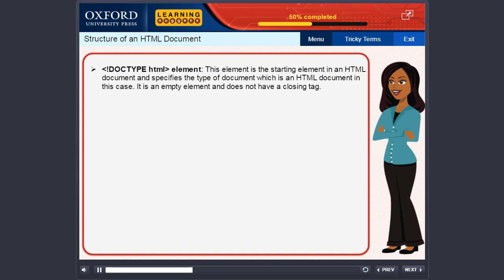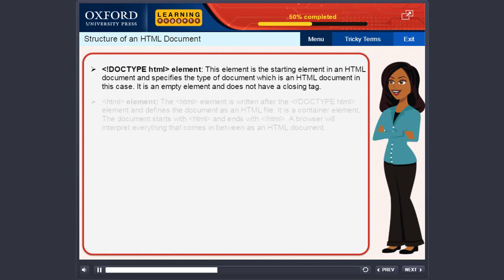The doctype element. This element is the starting element in an HTML document and specifies the type of document which is an HTML document in this case. It is an empty element and does not have a closing tag.